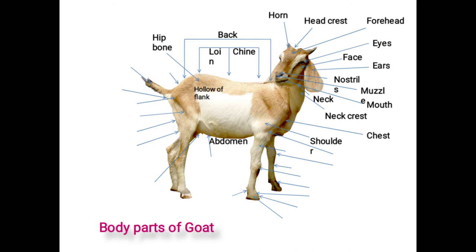Shoulder: the uppermost portion of the front legs is called the shoulder. Next is the shoulder blade: flat triangular bones of the shoulder known as the shoulder blade. Next is the arms: the portion of the legs between the shoulder and point of elbow known as arms.